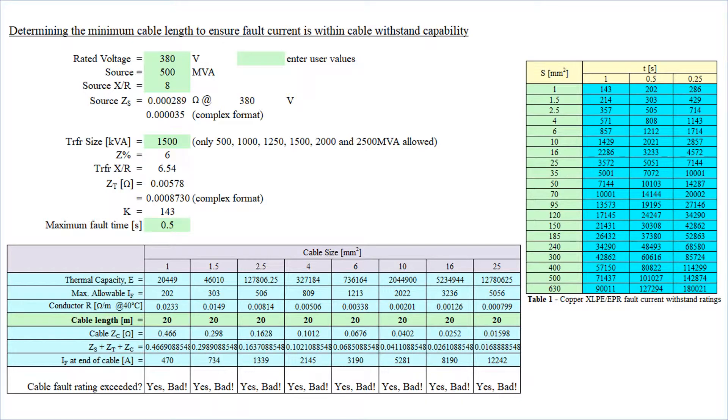Let's work through this. My voltage as I've said before is 380 volts, source is 500 MVA, X/R is 8, and from this I can get my complex source impedance. Note complex algebra is required as our impedances are complex quantities R + jX. Transformer size is 1.5 MVA, impedance is 6%, X/R is 6, and so I can calculate my transformer impedance in complex format as well. K I got from tables is 143, and my maximum fault time is 0.5 seconds.